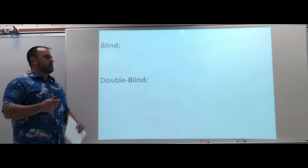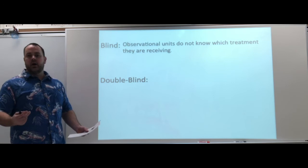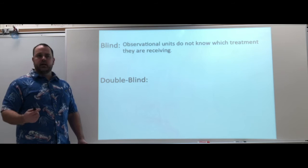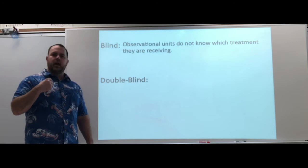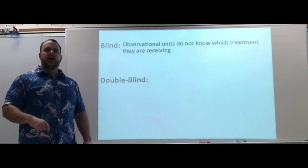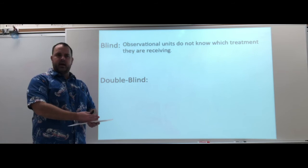We also have blind and double-blind experiments. These are used to control outside effects. In a blind experiment, the observational units do not know which treatment they're receiving. This ties in with the placebo — everyone gets a pill, such as a sugar pill, so you don't know whether you're taking a real medication or a fake one. But everyone does it the same way: every observation unit, no matter which group, comes at the same time — say 10 a.m. — and that's when they take their medication. That would be a blind experiment.